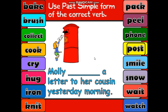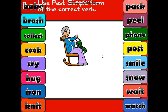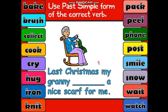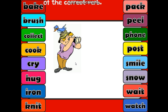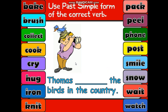Let's do the exercises. Molly posted a letter. My grandma knitted — why did I double the 't'? Because I had one vowel and one consonant, so I doubled the consonant 't' at the end and added 'ed'.